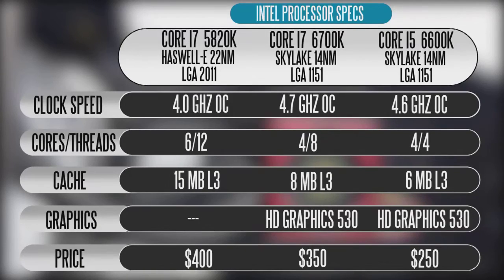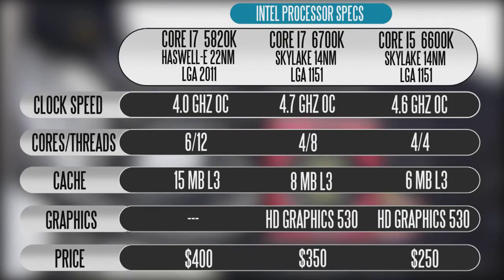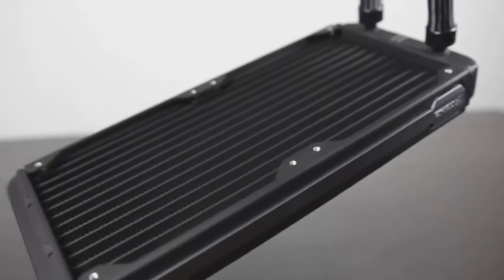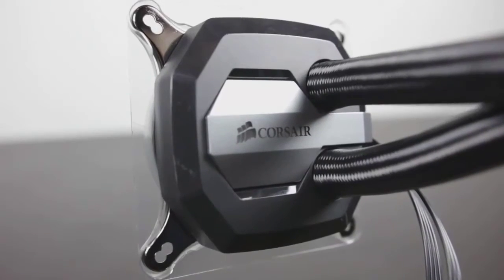All three of these CPUs are designed for overclocking, so we've done that. We've overclocked the 5820K to about 4 GHz. 4.7 GHz was the frequency we overclocked the 6700K, and the 6600K was overclocked to about 4.6 GHz. We can certainly go higher in terms of overall frequencies, but I find this to be stable based on the cooling platform I'm using, primarily the Corsair all-in-one liquid cooling solutions.